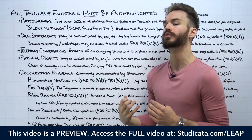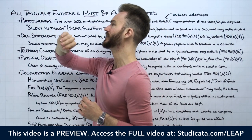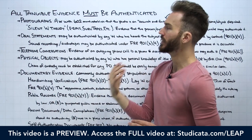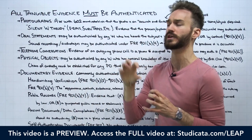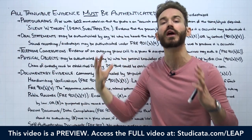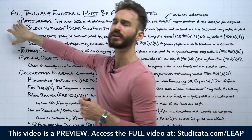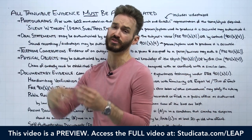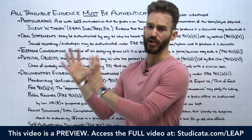Let's get into Rule 901 and talk about how we would go about authenticating different pieces of tangible evidence. The best way to think about authentication is to think about it as categories of different types of tangible evidence. Rather than going line by line through 901, it's better to categorize different pieces of tangible evidence and show how we apply 901 to them. We can start with photographs and videotapes, which are very common in modern trials. You always start with your relevance analysis under Rule 401 — is the evidence probative and material?